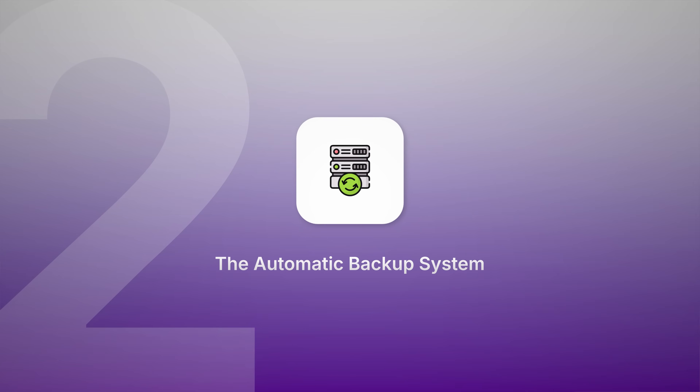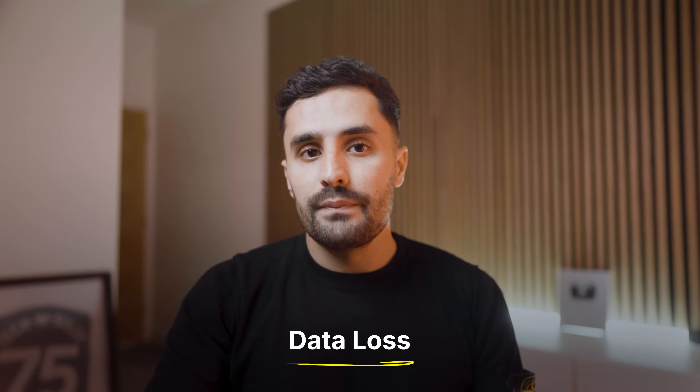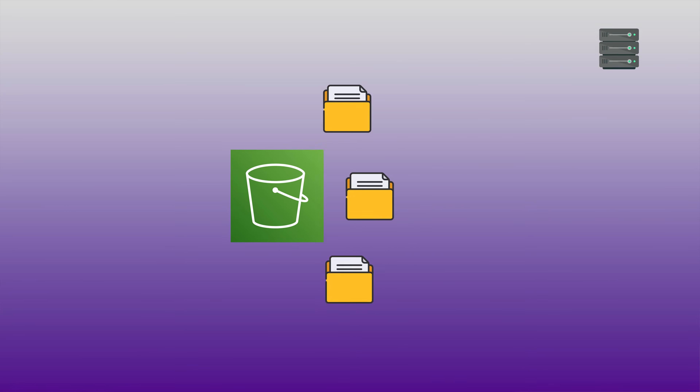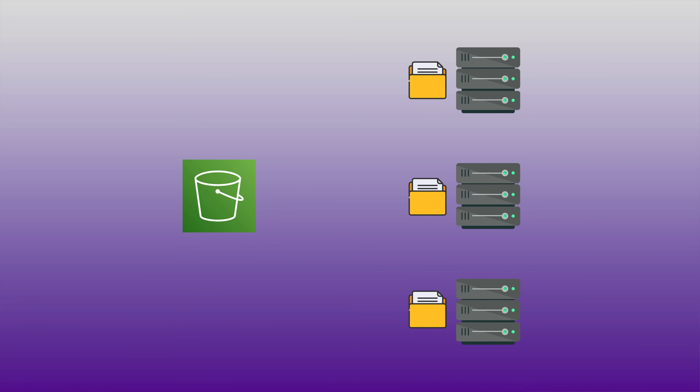Project number two: the automatic backup system. Let's tackle a problem that's even more terrifying for business owners — data loss. Most small businesses have terrible backup systems or no backups at all. They might occasionally copy files to an external drive, but these manual processes are unreliable and often forgotten during busy periods. This project creates a bulletproof automatic backup system that runs without any human intervention. We start with S3, AWS's Storage Service, which is incredibly reliable. When you store a file on S3, AWS automatically makes multiple copies and stores them in different physical locations — even if an entire data center gets hit by a tornado, your files are safe.